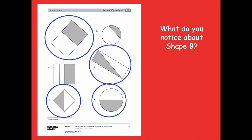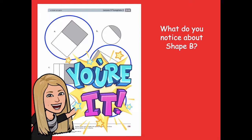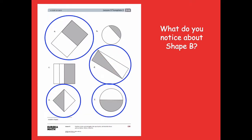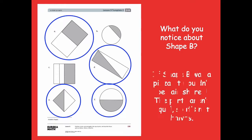What do you notice about shape B? Pause the video and think about shape B, then click play when you're ready. If shape B was a pizza, it wouldn't be fair shares — the parts aren't equal, so it's not halves. Halves means two equal parts make up the whole.